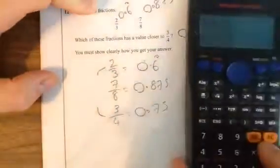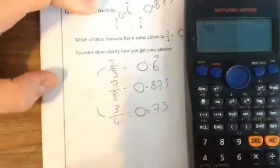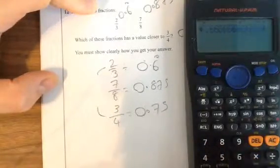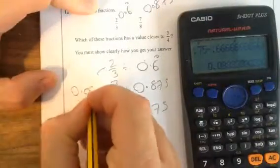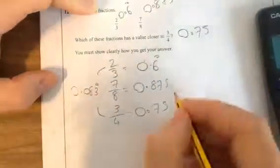Now, if you work out the differences between them, the difference between that one and that one, 0.75 minus 0.6. I'll just put loads of sixes in. Get six reoccurring. So, this is 0.083 reoccurring.